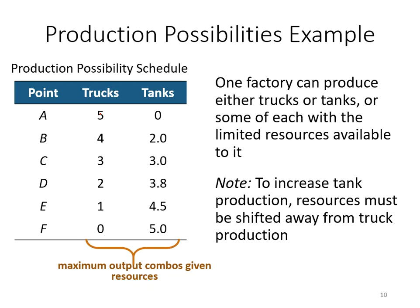This table is called the production possibility schedule, where you list all the possible outcome combinations in a table. Behind this table, it means you are fully using your scarce resources — you fully use your scarce resource, so you don't waste any of your resource. That is called the production possibility schedule.